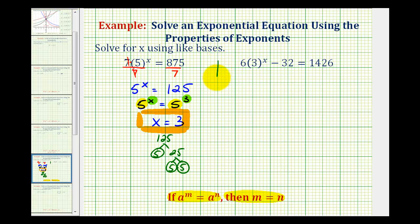In our second equation, we want to isolate 3^x. We need to undo the subtraction and multiplication, so we'll start by adding 32 to both sides. That would be zero, so we have 6(3^x) = 1458.